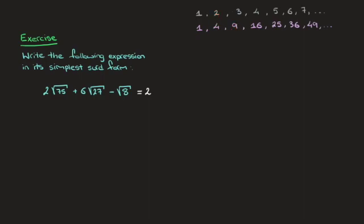The 9 we have here is 3 squared, which is 3 times 3, and so on and so forth. Having a list of square numbers like this is quite useful. To get from the top row to the bottom row we're squaring the number, and to get from the bottom row to the top row we're taking its square root.